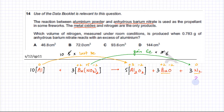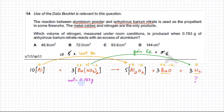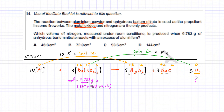We need to find the volume of nitrogen produced when 0.783 grams of anhydrous barium nitrate reacts. Moles = mass divided by molar mass. The molar mass of Ba(NO₃)₂: barium is 137, there are 2 nitrogens (14 × 2), and 6 oxygens (16 × 6). Calculating this gives 3 × 10⁻³ moles of barium nitrate.